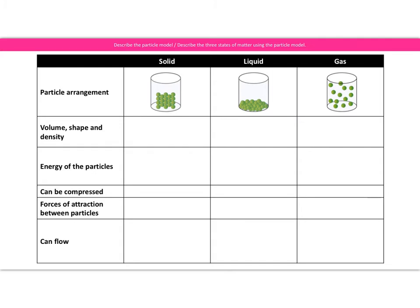Looking at a solid in terms of volume, shape, and density: you can clearly see in a solid particle diagram that there is a regular and repeating pattern — you would know exactly how and where to add more particles. From our GCSE work, we understand that a regular and repeating pattern means we are talking about a lattice structure. There is also very little space between the particles, so solids have the greatest density out of the three states of matter. The particles in a solid are vibrating about a fixed position, which tells us their energy is low relative to the other states.